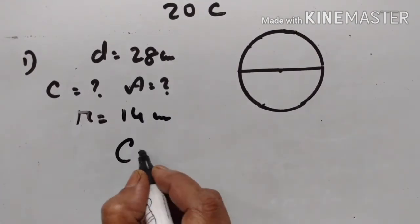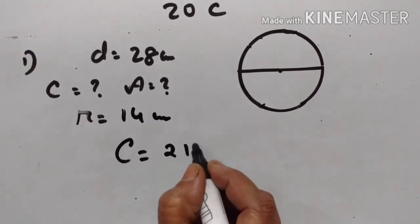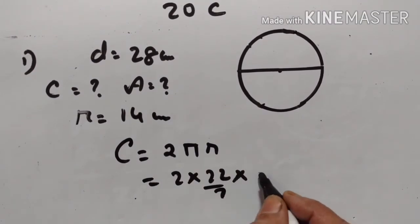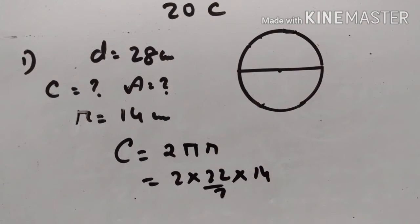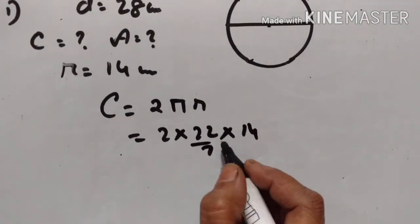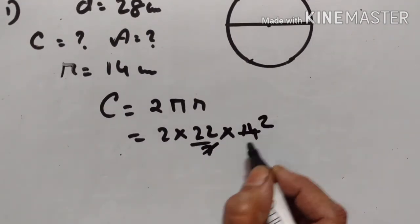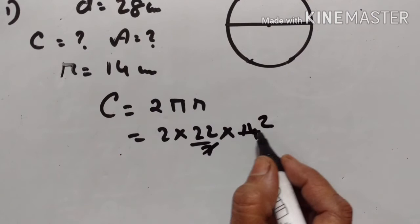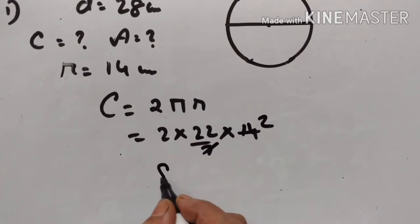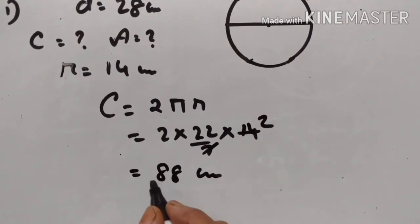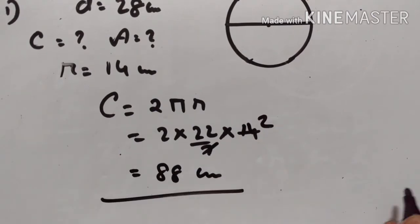The circumference is equal to 2πr. So 2 × (22/7) × 14 = 44 × 2 = 88 cm. That is the circumference.